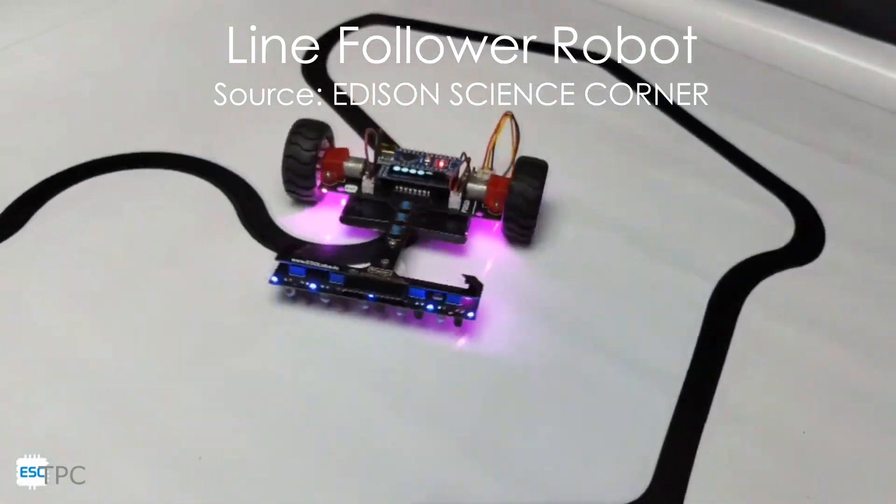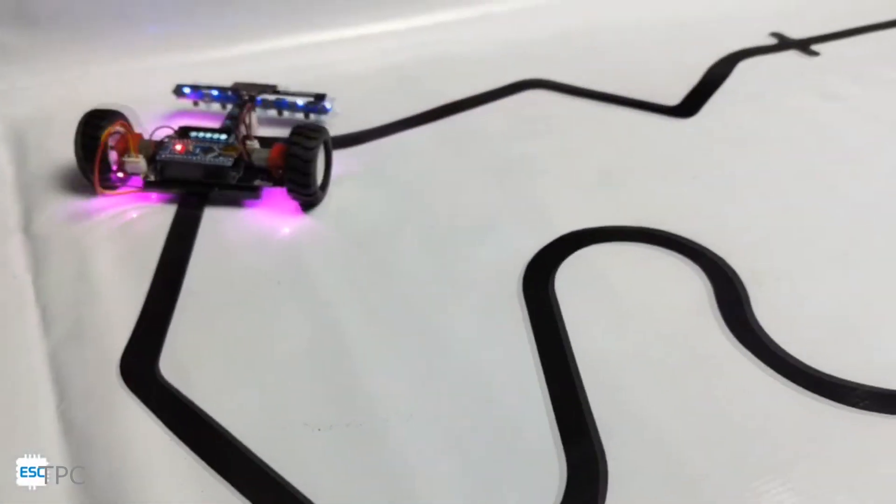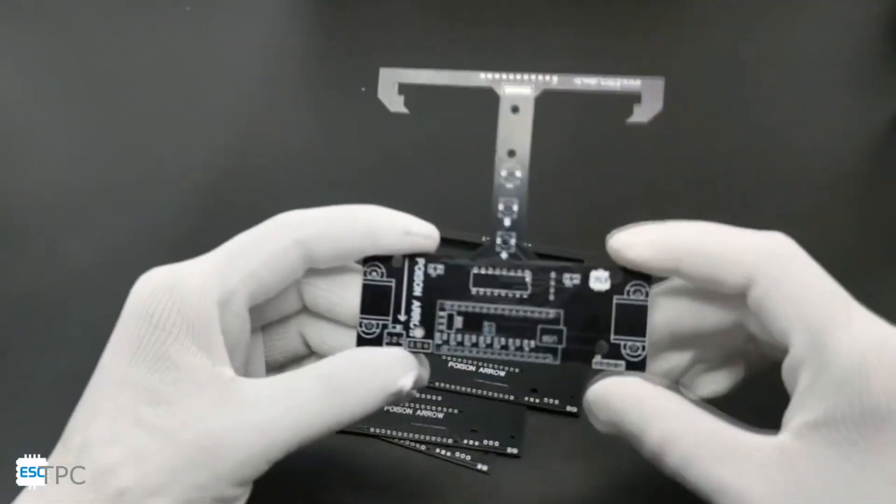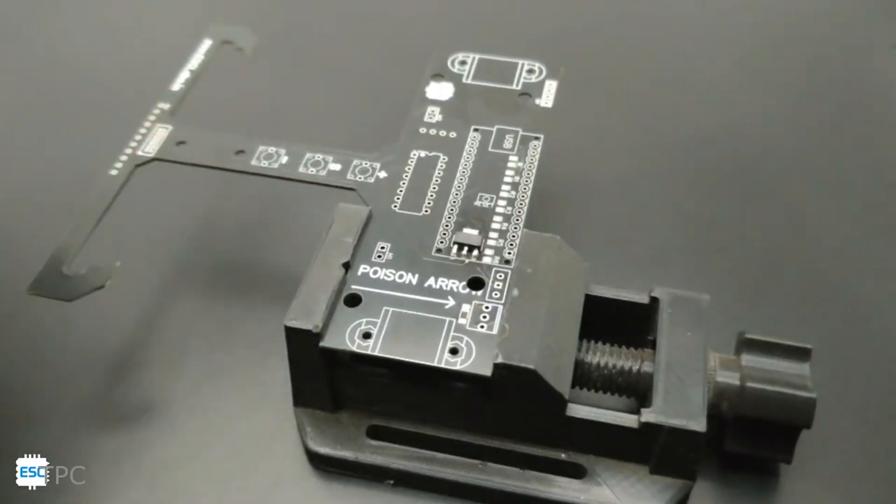Number 11. Next, we have a line follower, a sleek and robust robot made by Edison Science Corner. To maintain a simple and efficient design, he used a custom PCB as the chassis of the project.